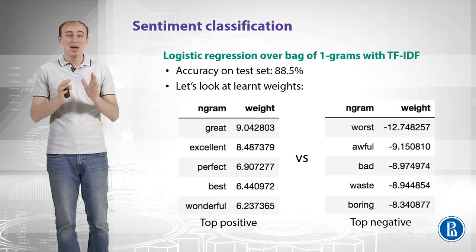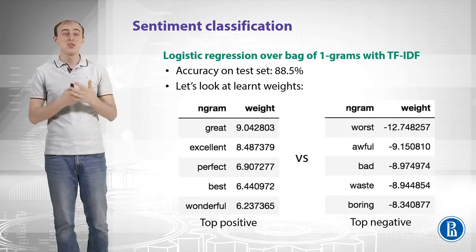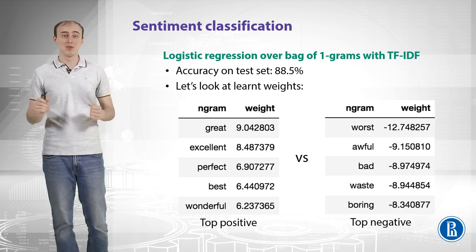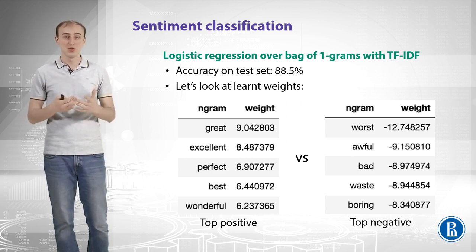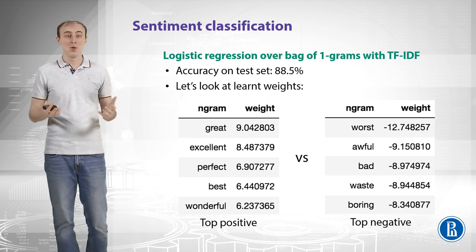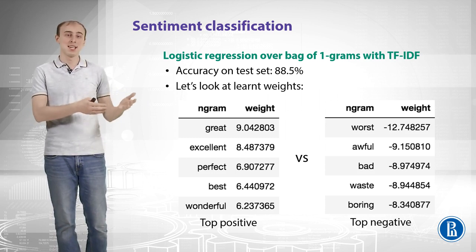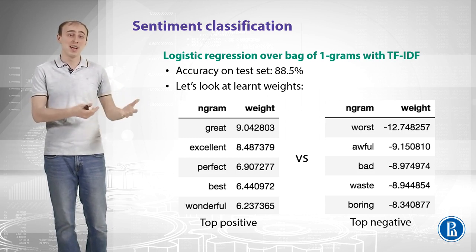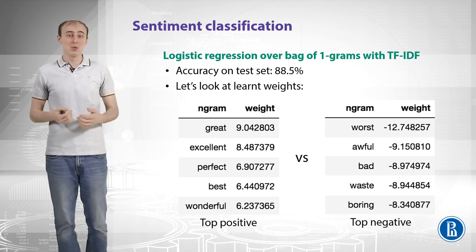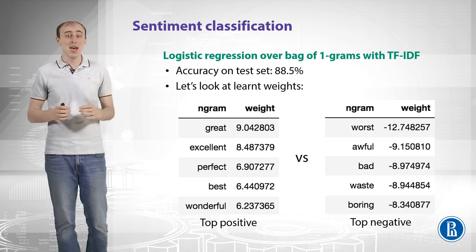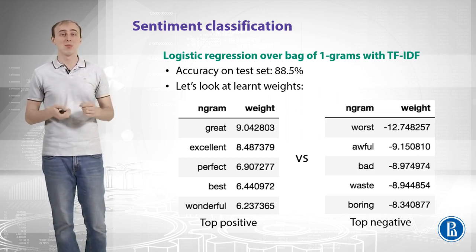Let's train logistic regression over bag of 1-grams with TF-IDF values. The accuracy on the test set is 88.5%, which is a huge jump from a random classifier at 50%. Looking at the learned features: the top positive weights include words like 'great,' 'excellent,' 'perfect,' 'best,' and 'wonderful.' The model captured the sentiment of those words knowing nothing about English — only the examples we provided. The top negative weights include words like 'worst,' 'awful,' 'bad,' 'waste,' and 'boring.' The model learned this from examples. That is pretty cool.